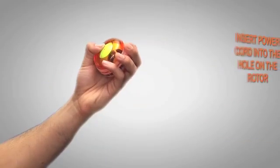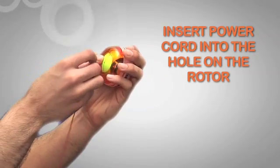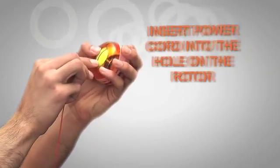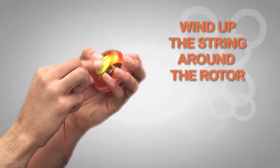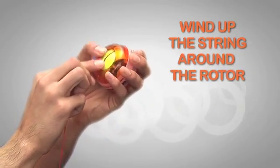Step 1. Hold the ball in your strong hand. The rotor should be facing the ceiling. Insert one end of the power cord into the hole in the center of the rotor. Proceed to wind up the string around the rotor, the same as you would wind up a yo-yo.